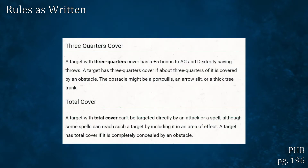Three quarters cover: a target with three quarters cover has a plus five bonus to AC and dexterity saving throws. A target has three quarters cover if about three quarters of it is covered by an obstacle — the obstacle might be a portcullis, an arrow slit, or a thick tree trunk. Total cover: a target with total cover can't be targeted directly by an attack or a spell, although some spells can reach a target by including it in an area of effect. A target has total cover if it is completely concealed by an obstacle.